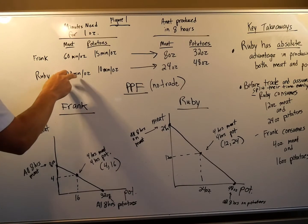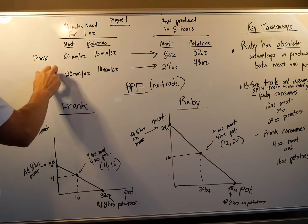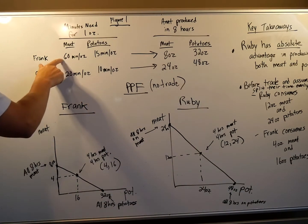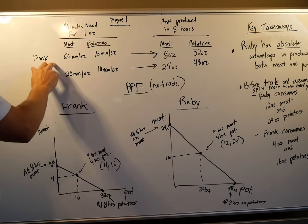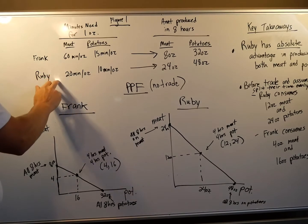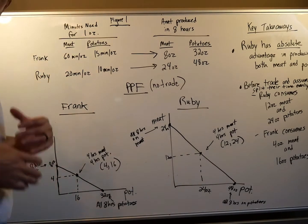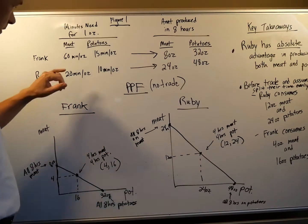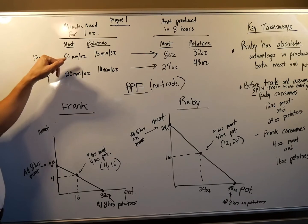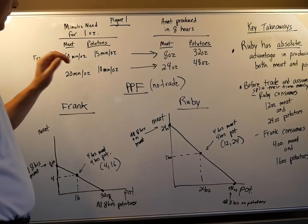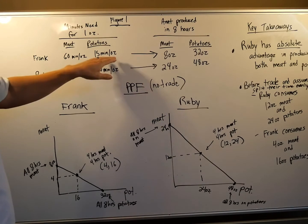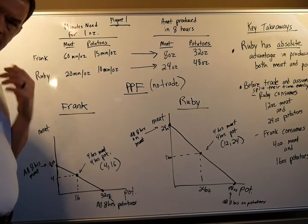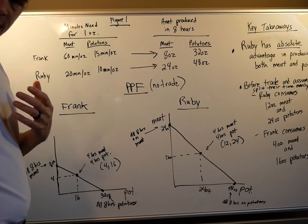Ruby, it takes her 20 minutes to make an ounce of meat. And we notice then that Frank is a little slower at making meat. So Ruby has an advantage here. That's called absolute advantage. Ruby, in the time it takes Frank to make one ounce of 60 minutes, can make three ounces because there's 20 minutes. There's three 20 minute blocks in an hour. So she can make three ounces an hour and he can only make one ounce an hour.